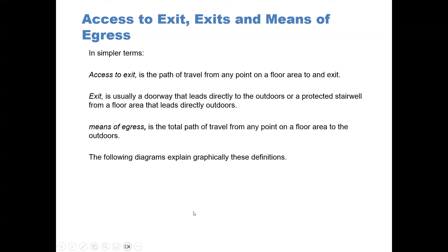However, in simpler terms, look at it this way. Access to exit is the path of travel from any point on a floor area to an exit, like a stairwell.